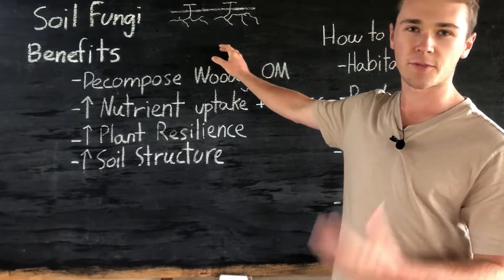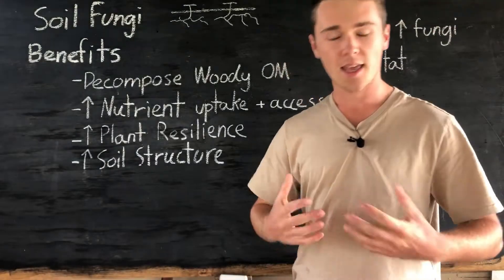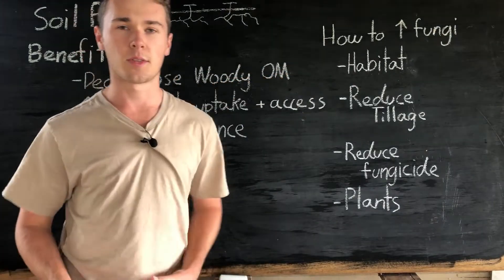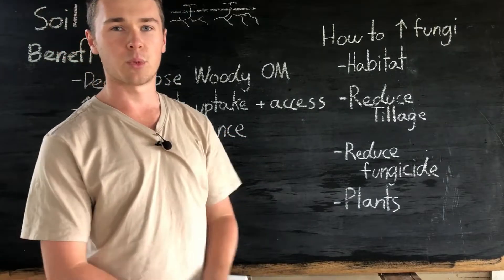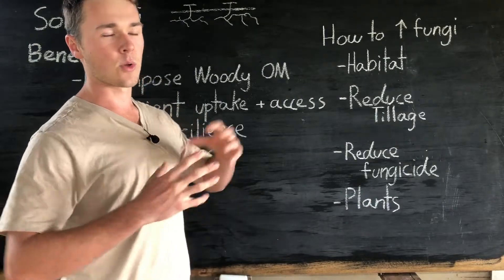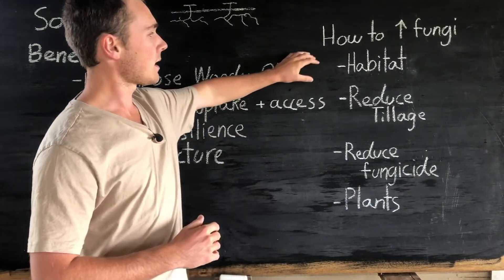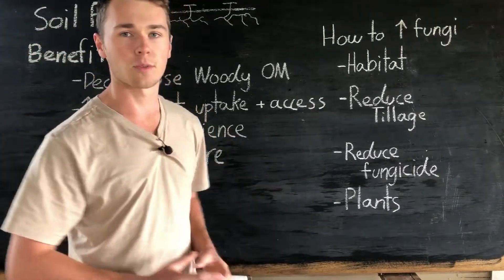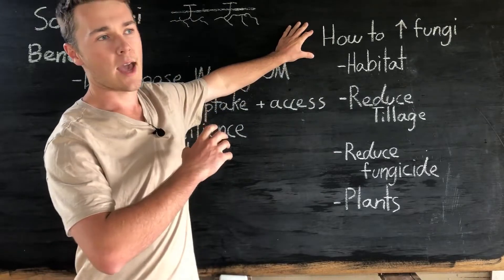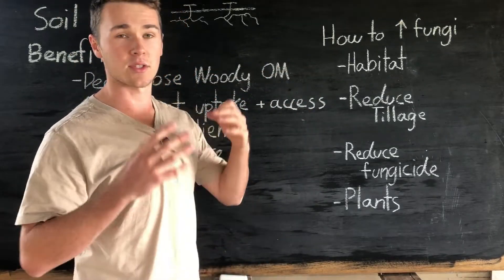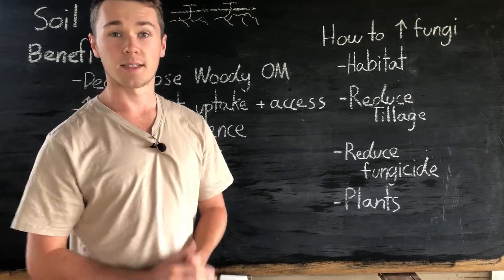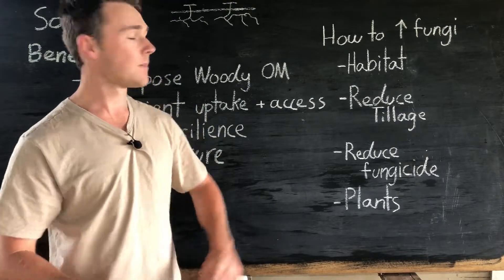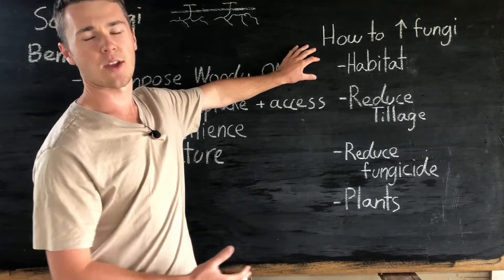Now that we know we really want fungi in our soil and want to maximise them to reap all these benefits, how can we actually increase fungi on our farms? Firstly, we want to make the habitat more preferable for fungi. Fungi love to live in organic matter — that's what they feed off. They love a safe environment surrounded by plant roots. We want lots of plant roots and lots of organic matter for fungi to have food and grow. They don't like lots of sunlight — UV light can damage them — so we want to ensure we have lots of ground cover to protect our fungi.